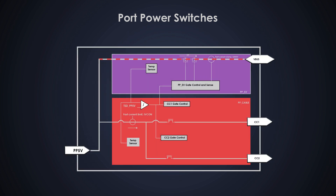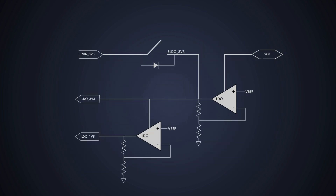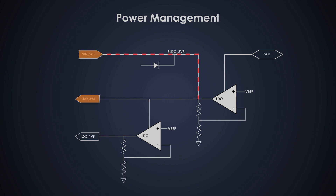Next are port power switches — like tiny traffic cops that control the flow of power. They let the right amount of electricity flow to the device and stop too much from coming in. Then there's power management, which is like the energy-saving mode in your device. It controls how much power the chip itself uses, keeps everything efficient, and provides a safe, steady 3.3 volts to help other parts work.